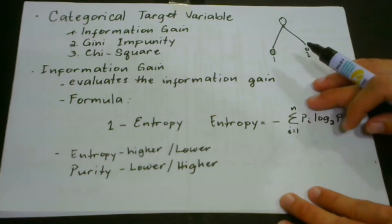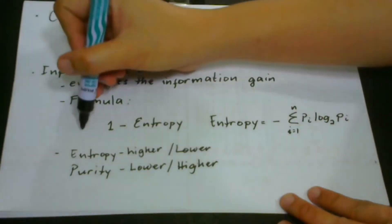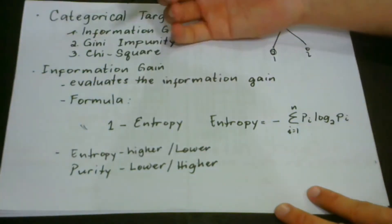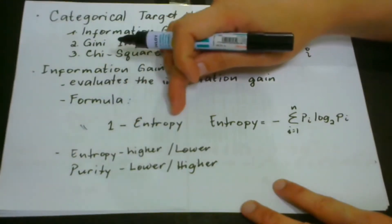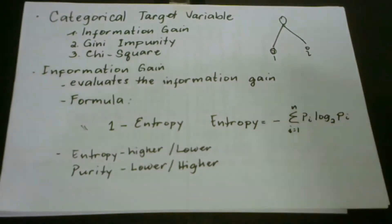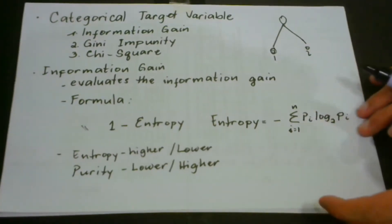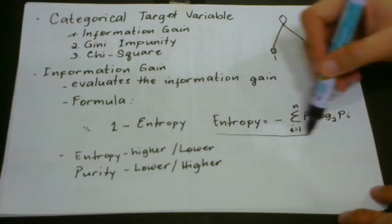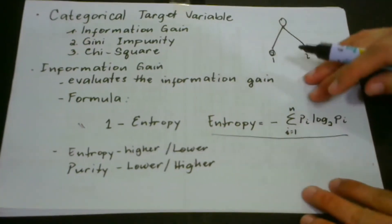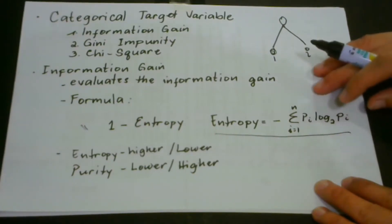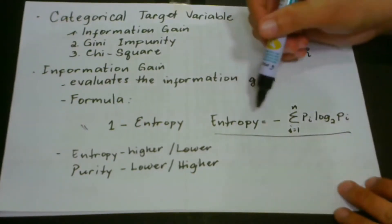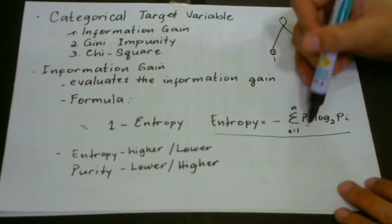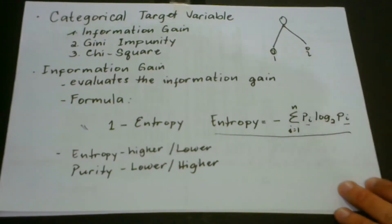How are we going to compute for information gain? We have a formula that tells us how to calculate it: 1 minus entropy. The formula of entropy is: entropy equals minus the summation of pi times log base 2 of pi, where pi is the probability.